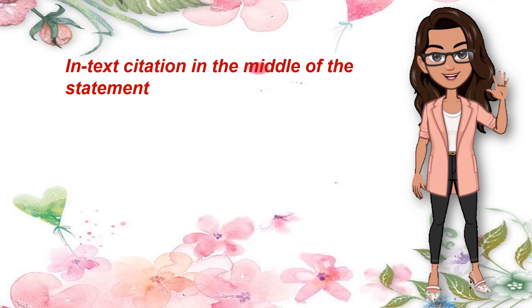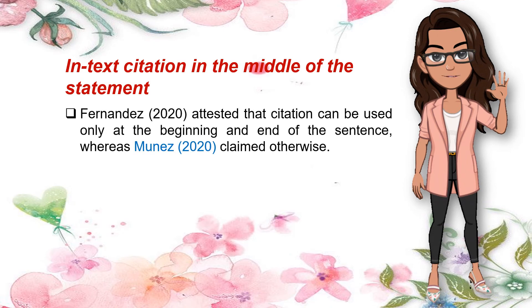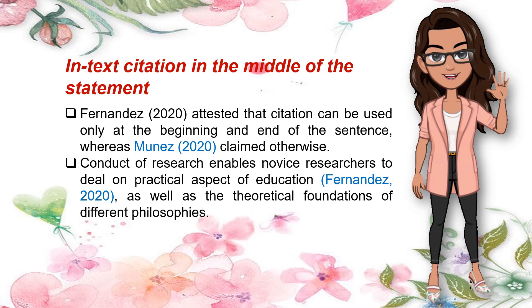Now, can we use citation in the middle? It is common practice to see citation at the beginning or at the end of the reference statement. However, there are instances that citation appears in the middle of the cited statement. Example: Fernandez (2020) attested that citation can be used only at the beginning and end of the sentence, whereas Munez (2020) claimed otherwise. Another example: Conduct of research enables novice researchers to deal on practical aspects of education (Fernandez, 2020), as well as the theoretical foundations of different philosophies.